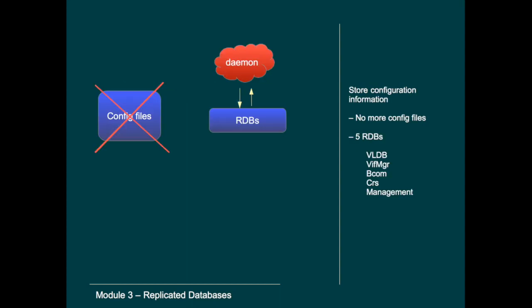The purpose of RDBs is that they are replacing configuration files. The RDBs are managed by the cluster software and they contain cluster configuration information. Instead of using configuration files, ONTAP uses databases to store all the information. For example, instead of having an /etc/exports file like in 7-mode or on most other Unix and Linux systems, ONTAP stores that information in an export policy, and this policy is part of a replicated database.